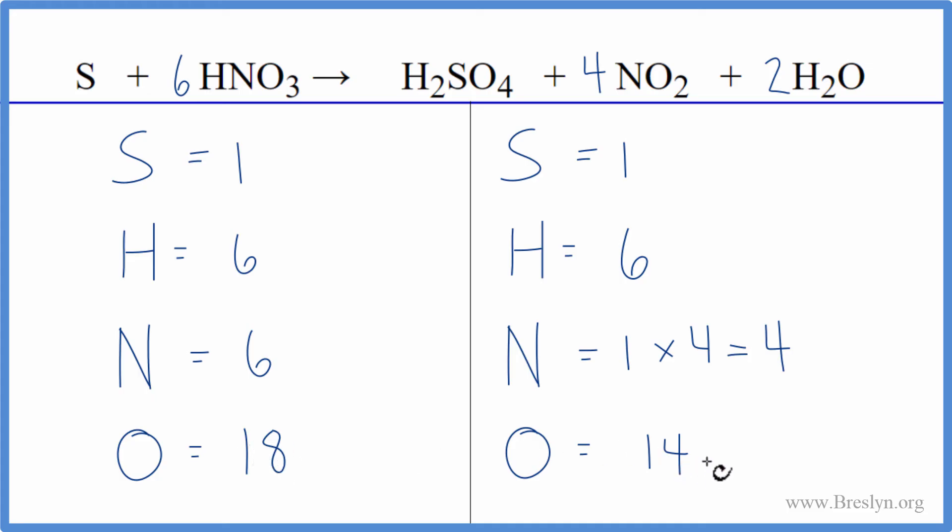So now the nitrogens and the oxygens aren't balanced. We'll fix the nitrogens and then see what we can do with the oxygens. So we have four here, that needs to be six. So let's change the coefficient. Instead of the four, we'll put a six,